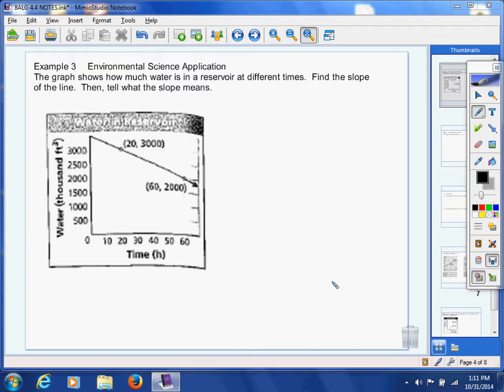We're going to do an environmental science application. The graph shows you how much water is in a reservoir at different times. We are to find the slope of the line and then tell what the slope means.